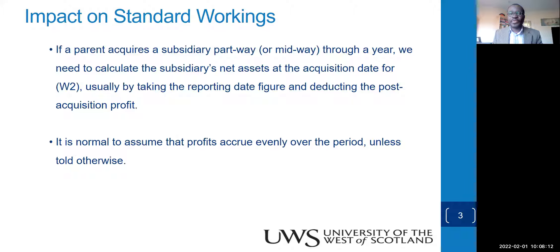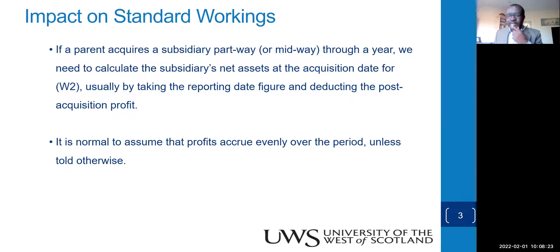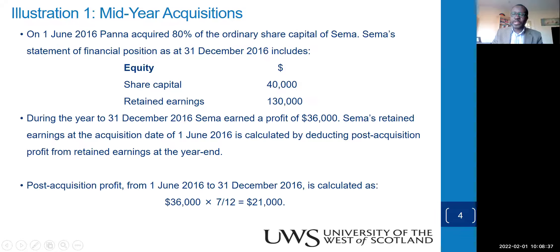If a parent acquires a subsidiary midway through the year, the W2 working — the fair value of the identifiable net assets of the subsidiary — is what we take more note of. Usually we look at the reporting date figure and deduct the post-acquisition profit to get our pre-acquisition figure. We assume profits accrue evenly throughout the year.